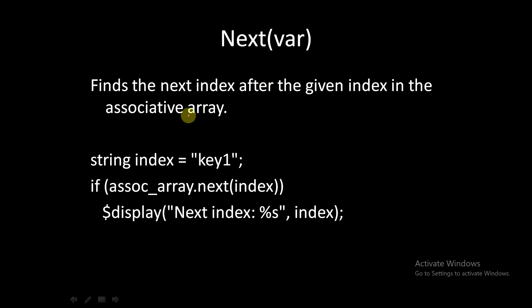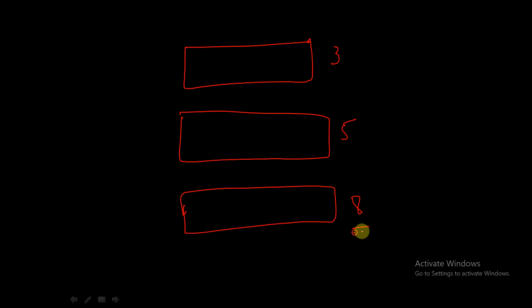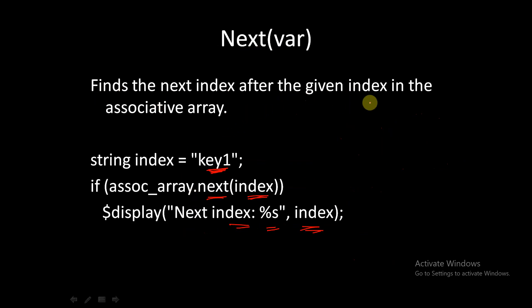The next built-in function is `.next`, which finds the next index after the given index in the associative array. For example, with `string index = "key1"`, calling `associative_array.next(index)` and then displaying index will give the next index value. For instance, if memory locations are at positions 1, 5, and 8, and the current index is 5, `.next` will return 8.